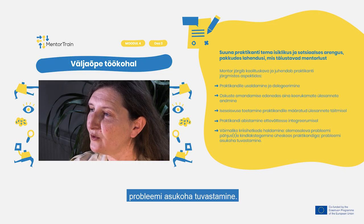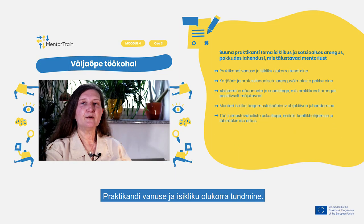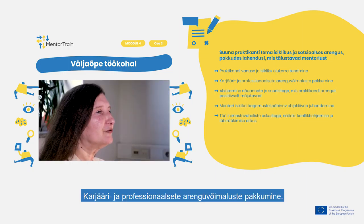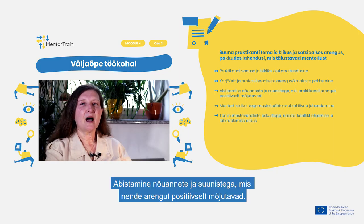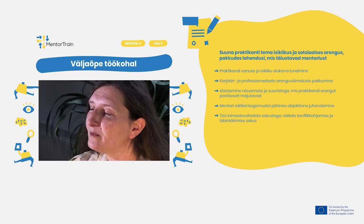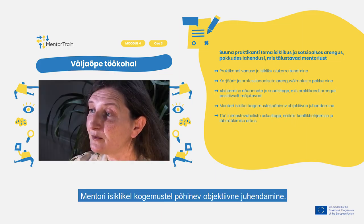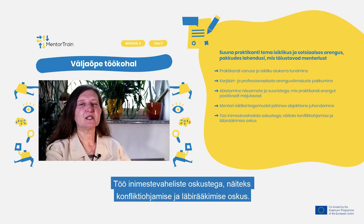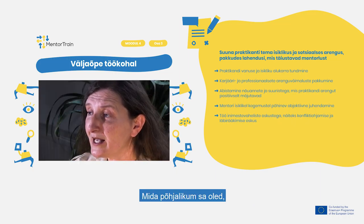Identifying the cause of current problems together with the apprentice, identifying where the problem is, being aware of the apprentice's age and personal situation, being able to provide career and professional development, helping with advice and guidance that positively influence their evolution, objective guiding based on the personal experience of the mentor, and working on interpersonal relationship skills such as conflict management and negotiation.